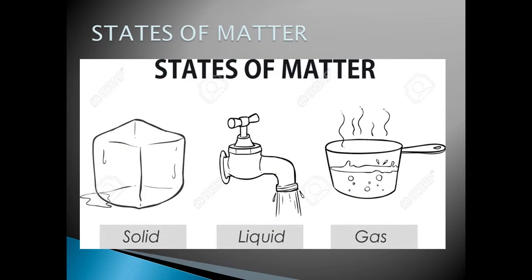What are the states of matter? We have only three states of matter: solid, liquid, and gas. So how many states of matter do we have? Yes, excellent — three states of matter. What are the three states of matter? Very good — solid, liquid, and gas.